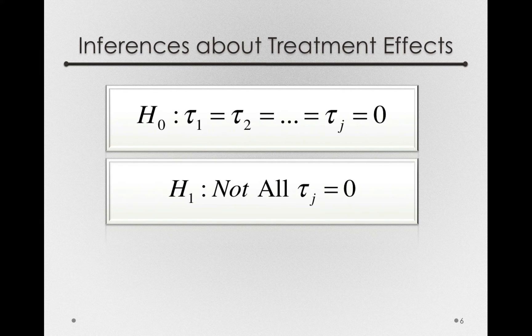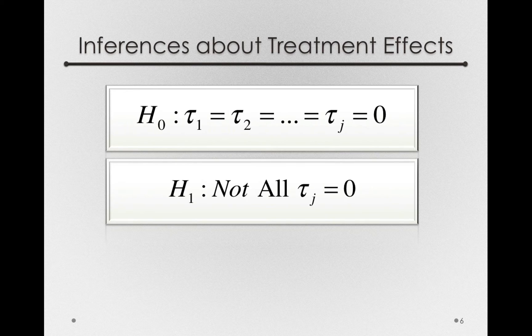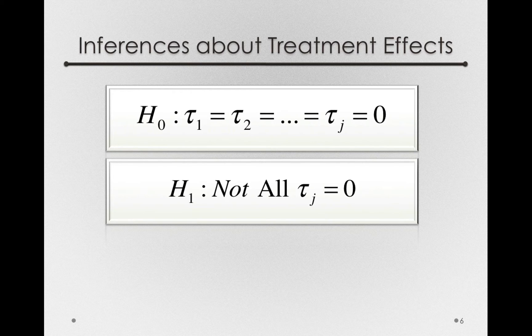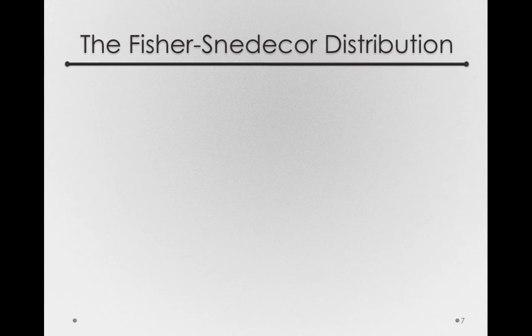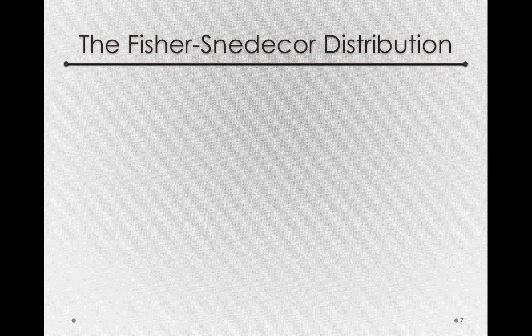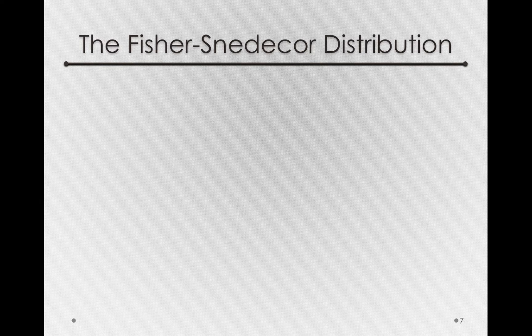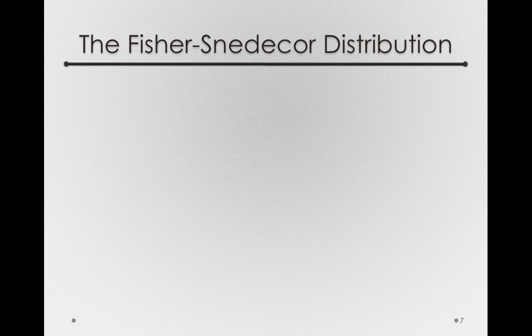Before we get to that, let's take a side step, and I want to introduce you to a new distribution, a distribution that's going to allow us to test these tau's from our sample data to the population data. That distribution is known as the Fischer-Snedecor. Now, as you might have guessed, this distribution bears Fischer's name because most of the methods that led to its development were owed originally to Ronald Fischer.